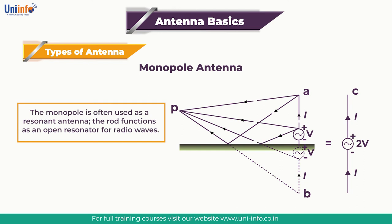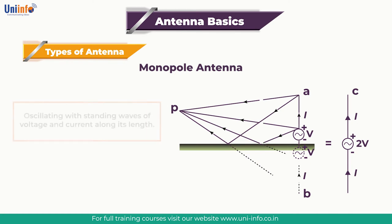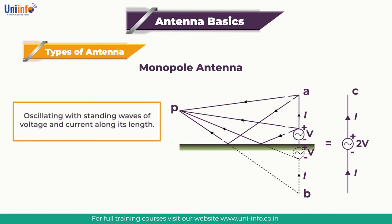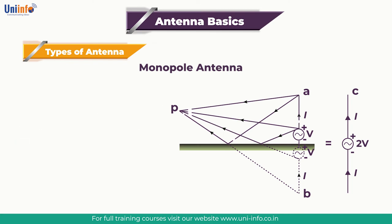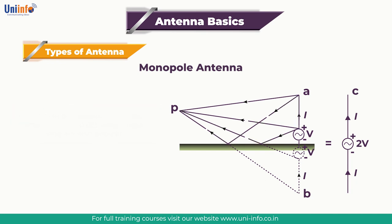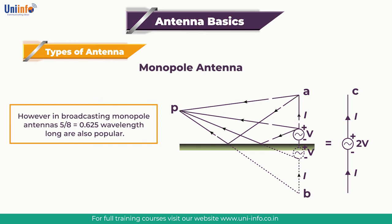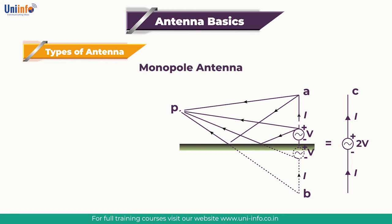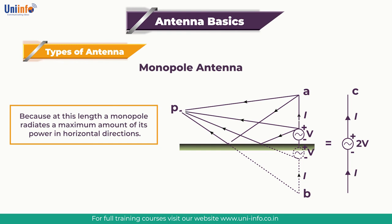The monopole is often used as a resonant antenna. The rod functions as an open resonator for radio waves, oscillating with standing waves of voltage and current along its length. Therefore, the length of the antenna is determined by the wavelength of the radio waves it is used with. The most common form is the quarter-wave monopole, in which the antenna is approximately one-quarter of the wavelength. However, in broadcasting, monopole antennas of 5/8 wavelength (0.625λ) are also popular, because at this length a monopole radiates a maximum amount of its power in horizontal directions.